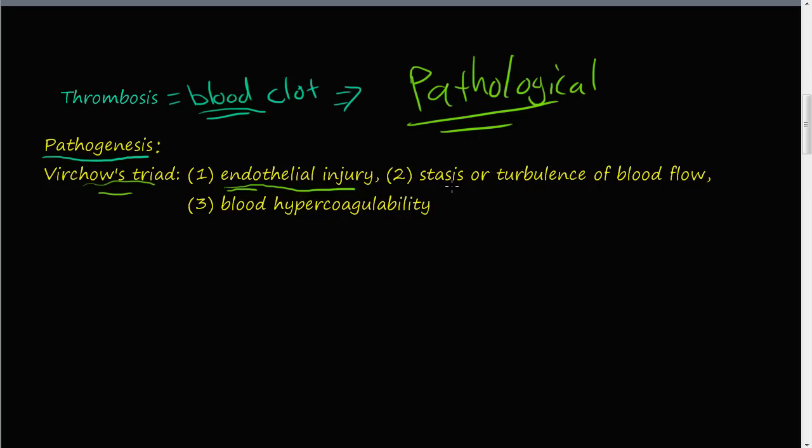Number two is the stasis or the turbulence of blood flow. So stasis is slow or stagnant blood flow. The slow or stagnant blood flow or the turbulent blood flow can cause thrombosis.